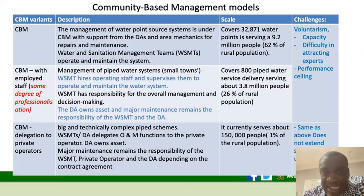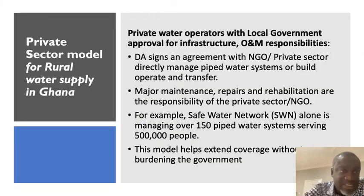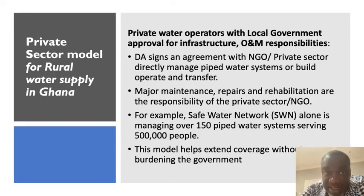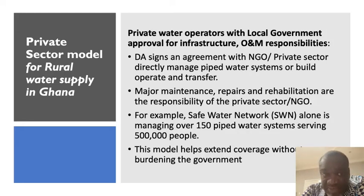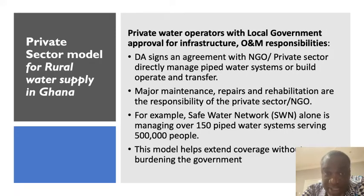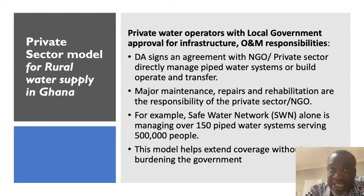The second model is the private sector model, where the private sector signs an agreement with a district assembly — the local authority. The agreement is for directly managing a pipe scheme or to build, operate, and transfer. In this case, major maintenance, repairs, and rehabilitation rest with the private sector, and in some cases an NGO. A typical example is what Safe Water Network is doing — they are managing over 150 water stations serving about half a million inhabitants. With this model, there are cases where they provide the infrastructure, which really helps government since government will not have to look for money to provide infrastructure.